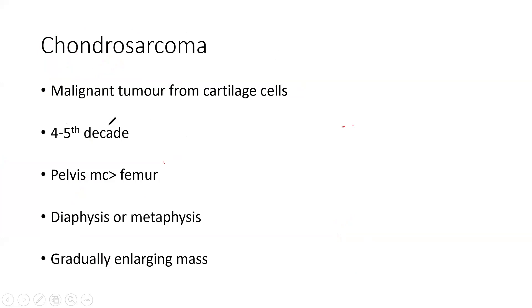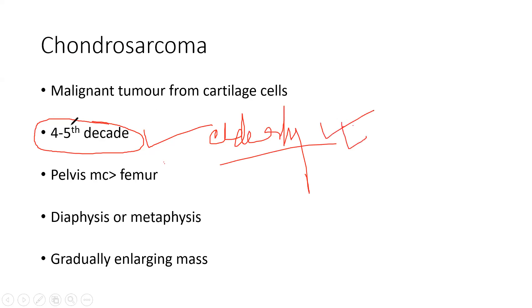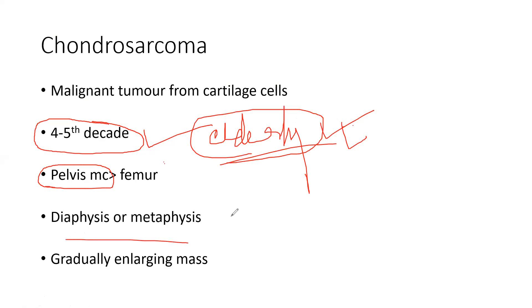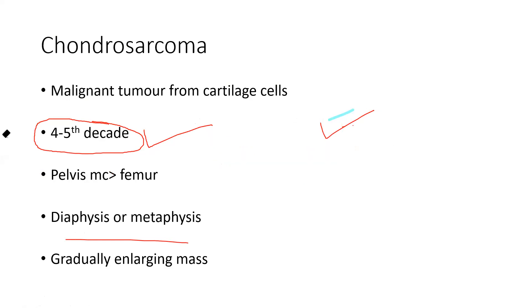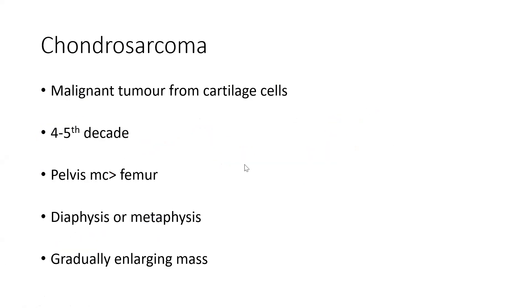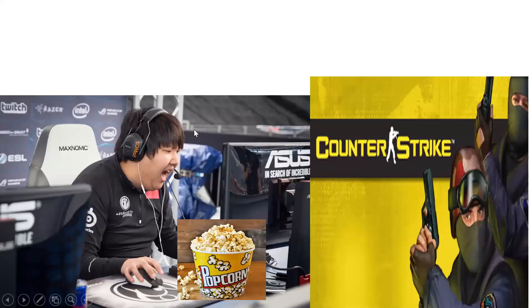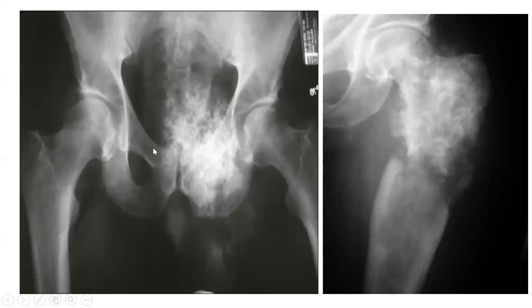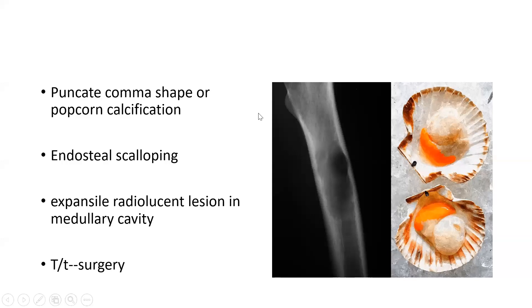Chondrosarcoma occurs in the fourth to fifth decade — elderly people. It is not common in young children. Pelvis is the most commonly involved site, because the mnemonic is counter-strike gamers sitting on their pelvis for 8–10 hours. It can also involve diaphysis and metaphysis — it is a gradually enlarging mass.